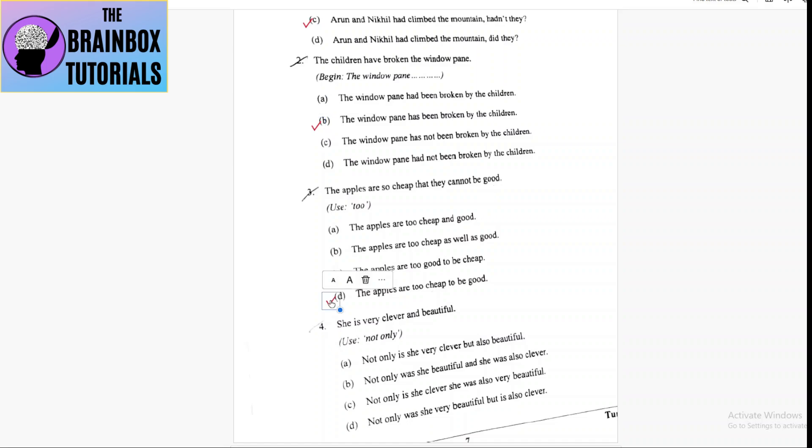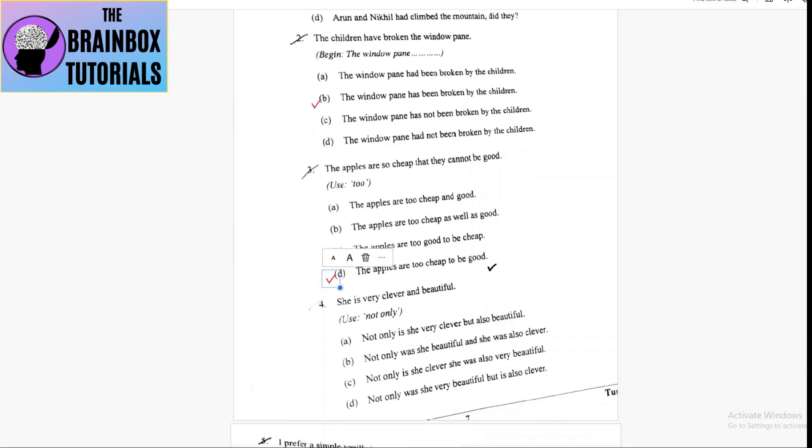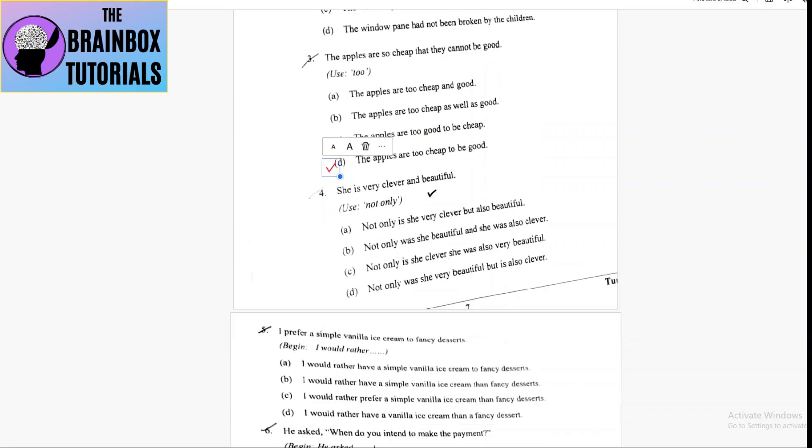Coming to number four: she is very clever and beautiful. Use 'not only'. Option A: not only is she very clever but also beautiful. Option B: not only was she beautiful - no, it is wrong. Option C: not only is she clever she was also very - that is also wrong.